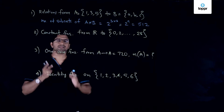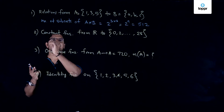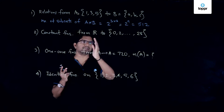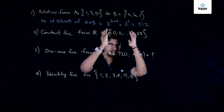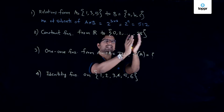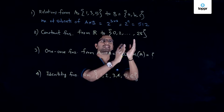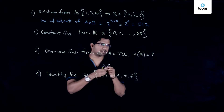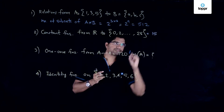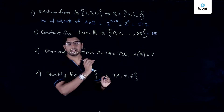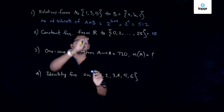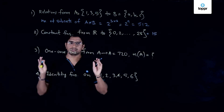Coming to the next part, we are asked to find the number of constant functions from the set of real numbers to a set containing all even numbers from 0 to 28. We need to be careful about how to count the number of elements in this set — it has 15 elements.